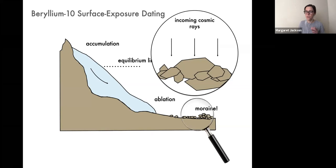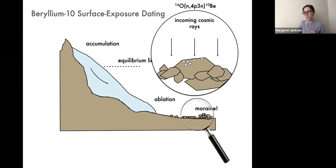As the incoming rays enter the rock surface, every so often one will strike an oxygen atom within a molecule of the mineral quartz. If this collision occurs with just enough energy, the incoming particle will kick out a few protons and a few neutrons — and what was once a single atom of oxygen-16 will become a single atom of beryllium-10.